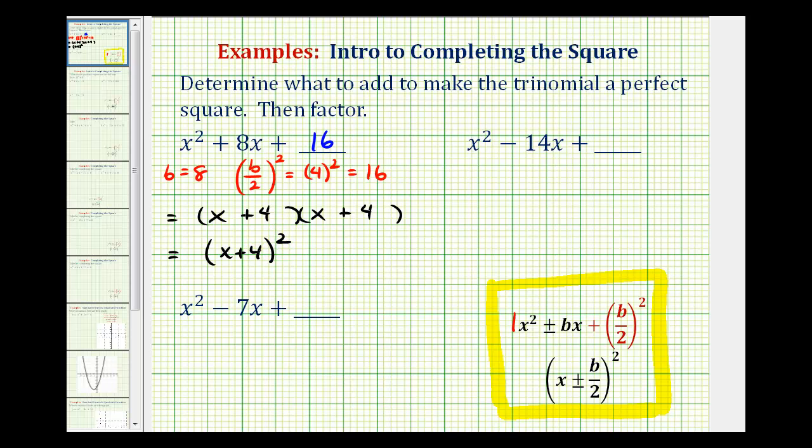In our next example, notice how b is equal to negative 14. So b divided by two squared is now going to be negative 14 divided by two, which is negative seven squared, which equals 49. What you'll notice is the constant term is always going to be positive if we have a perfect square trinomial. If it's negative, it cannot be a perfect square trinomial.